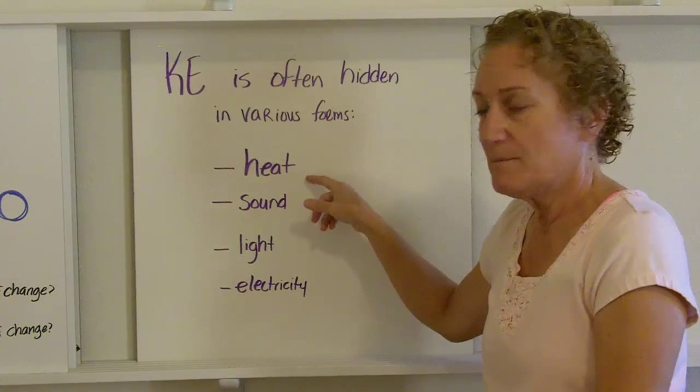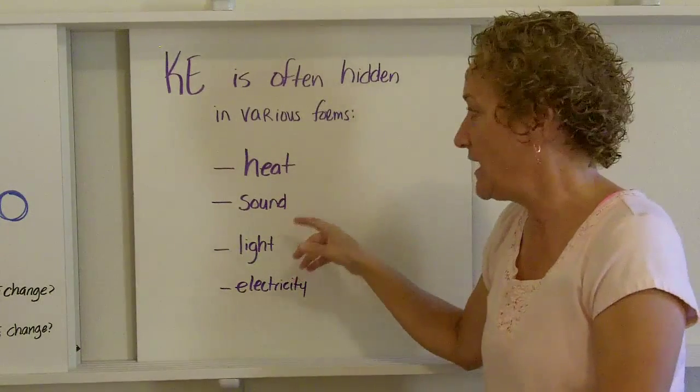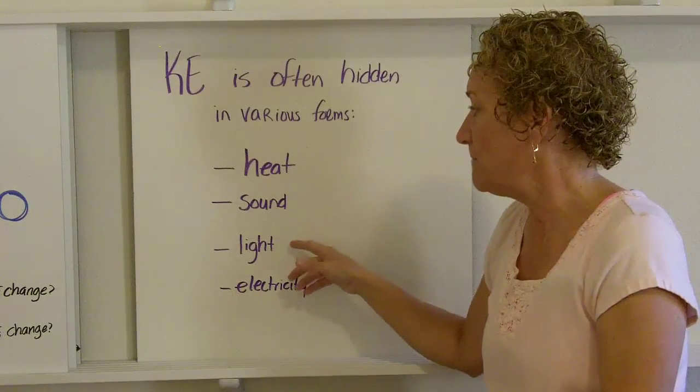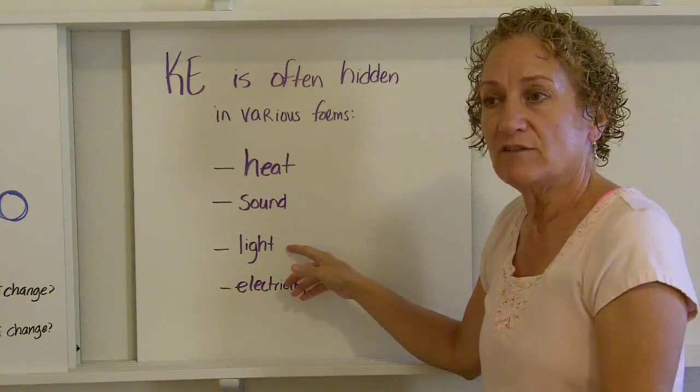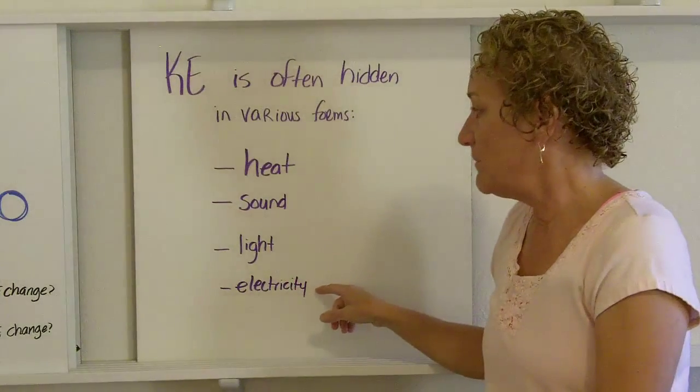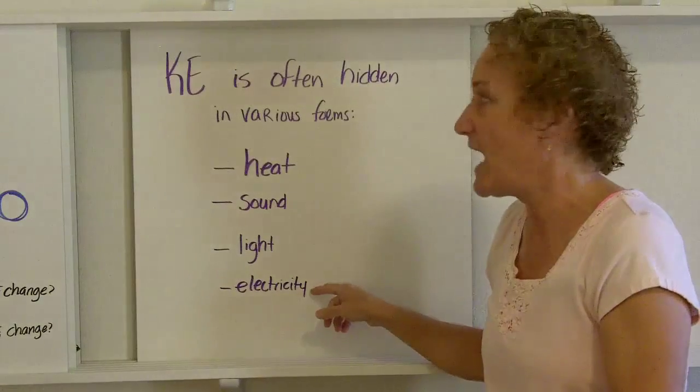Kinetic energy can take various forms. It can be in the form of heat, which is the molecules moving. It can be in the form of sound, which is vibration of molecules as well. It can be in the form of light, which is photons of energy traveling, or it can be in the form of electricity, which is about atoms.